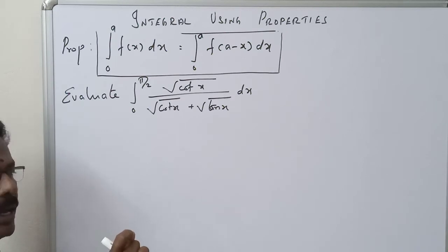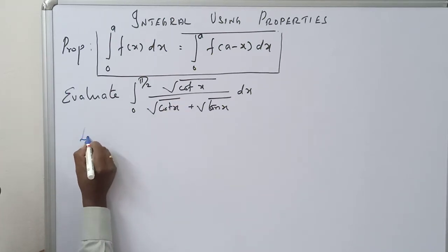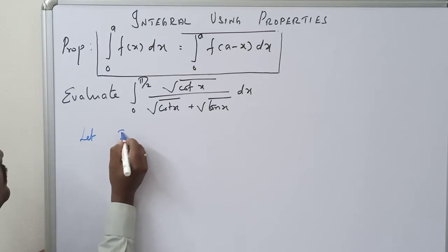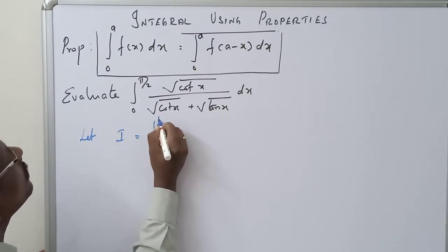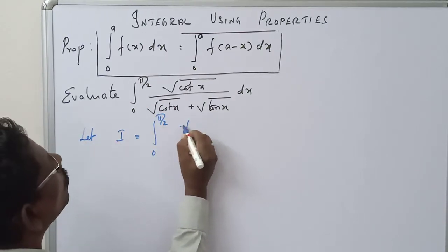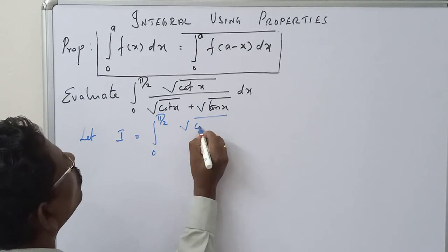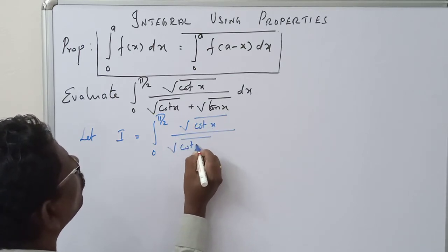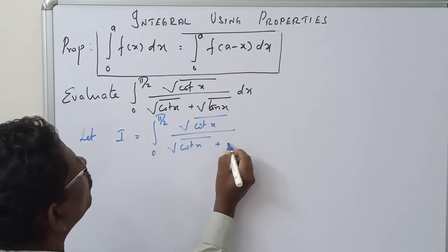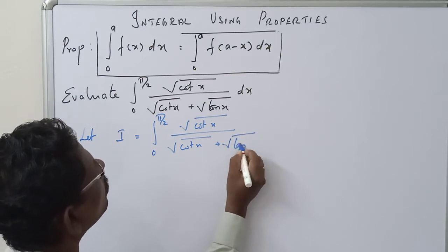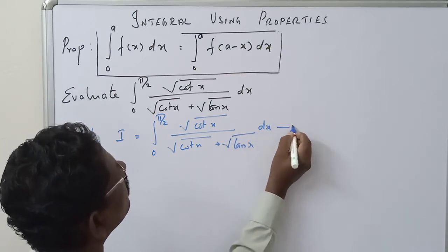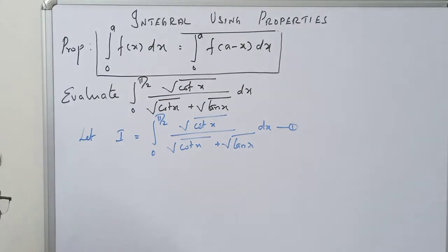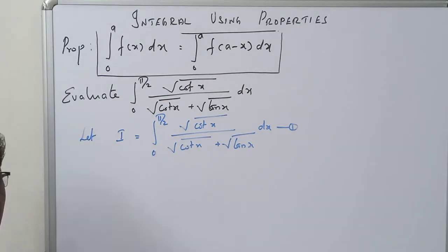First, take the given question equal to I. Let I equal the integral from 0 to π/2 of √(cot x) divided by √(cot x) plus √(tan x) dx. This is equation number 1. The given expression is equal to I.